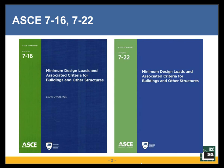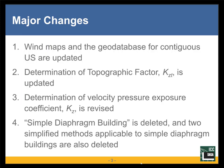As mentioned, we are discussing changes from ASCE 7-16 to 7-22. I have two slides listing what we consider to be the most important changes. First, the wind speed maps and the geodatabase for the contiguous United States are updated — so the wind speed maps of ASCE 7-22 are different from those of ASCE 7-16.